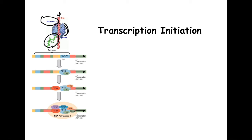Now let's talk about transcription initiation. In prokaryotes, initiation required a sigma factor — but there is no sigma factor in eukaryotic transcription. When talking about eukaryotic transcription, you must think transcriptional factors, abbreviated as TFs. We have our promoter region and transcriptional start, with the TATA box present. The first thing to remember is that transcriptional factor 2D is the one that recognizes the TATA box, and there's an associated protein called TBP.